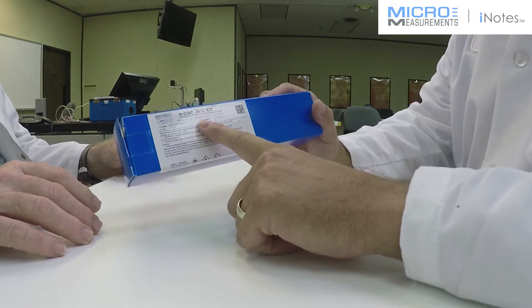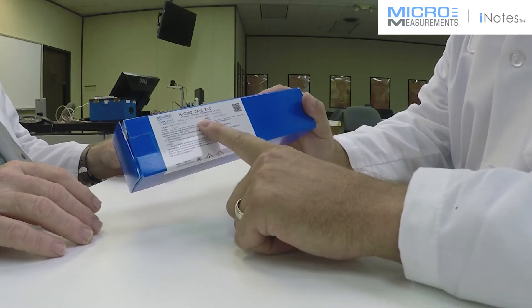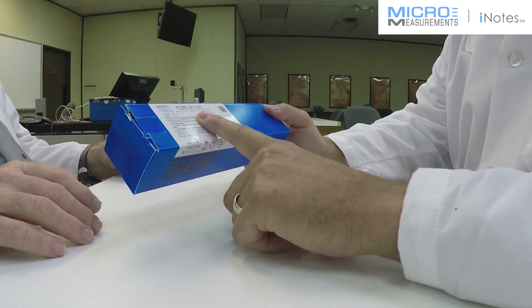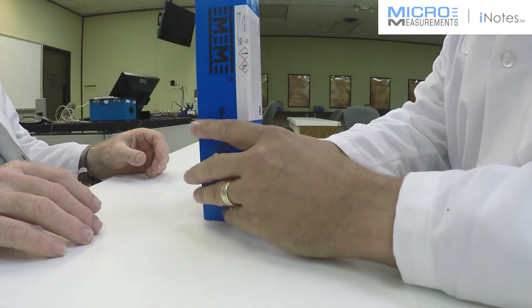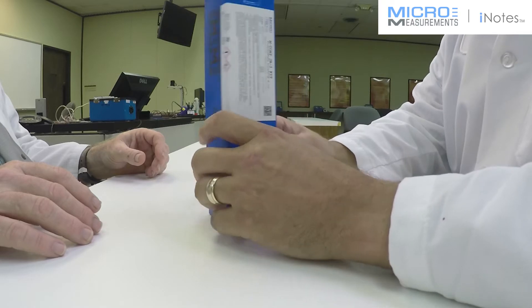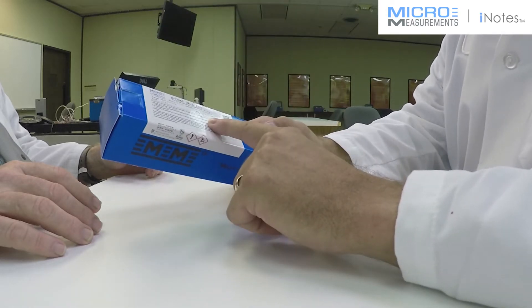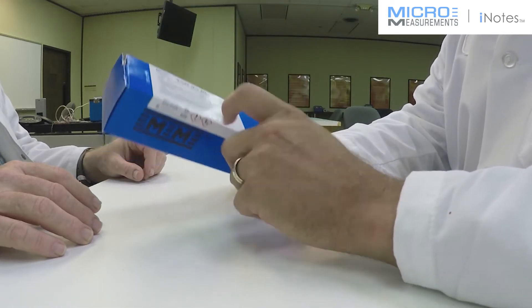This is the MCOTE JA-1, which is a polysulfide compound used to protect strain gauges. This material is one of the toughest environmental coatings that we offer for protecting gauges.